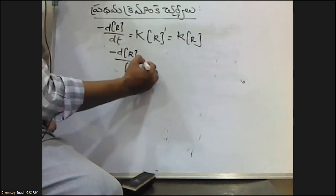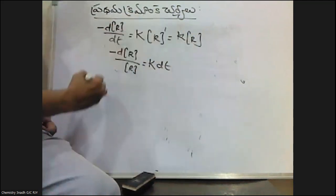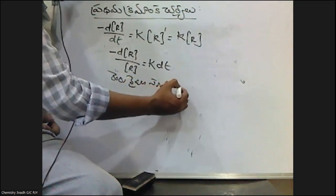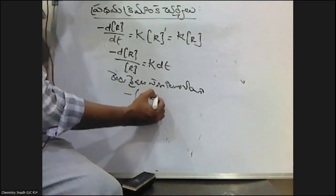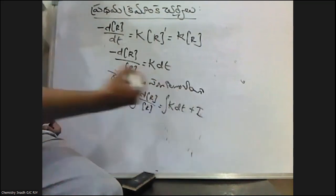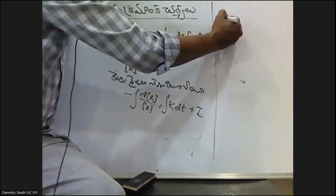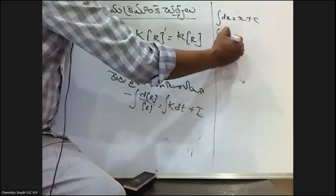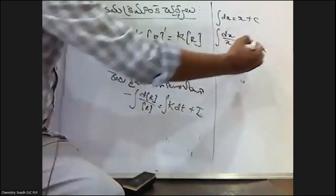R is equal to K into R. Taking the integral, minus integral dR by R is equal to integral K dt. Using the formula: integral dx is equal to x plus c, and integral dx by x value is minus ln x plus c.